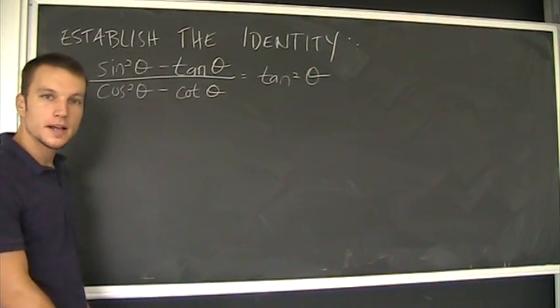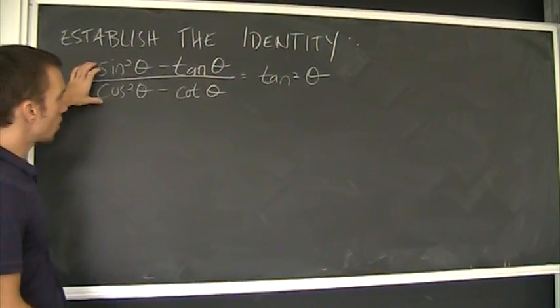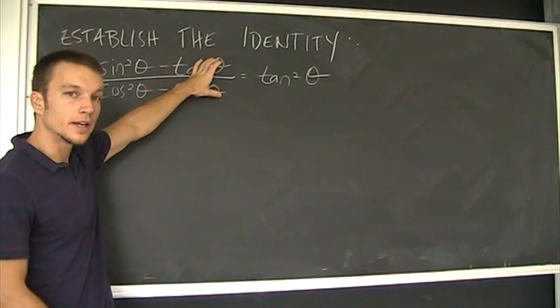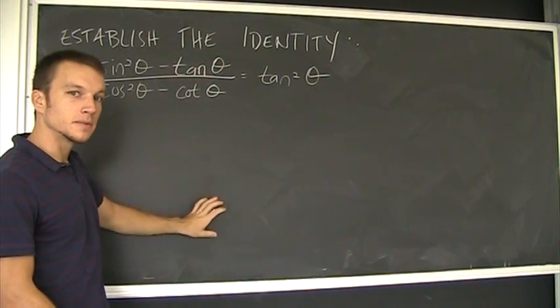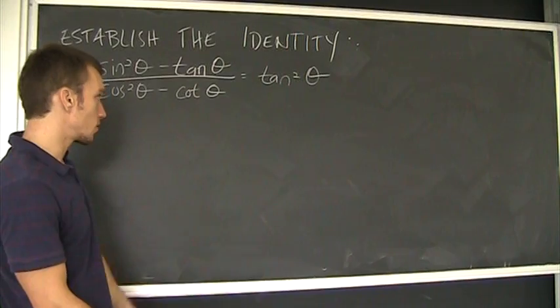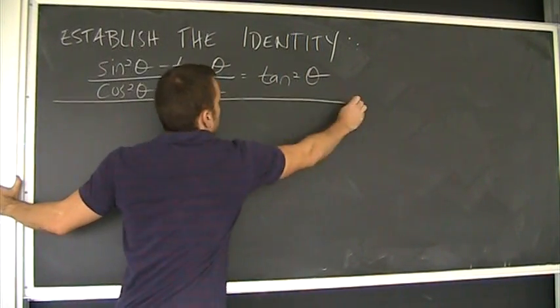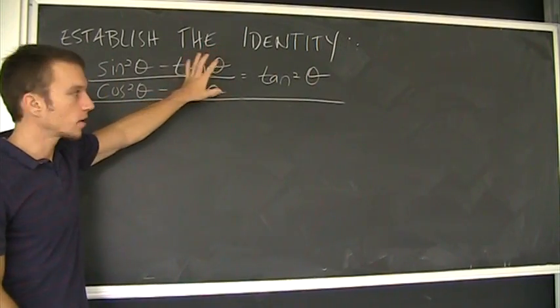How could that possibly be true? Well, let's see if we can't figure it out. All of this, you should be able, hopefully, to apply some identities and maybe use some algebra and end up with tangent squared. All right, so to establish the identity, I'm going to draw a line because that's not part of my work. That's what I want to show.